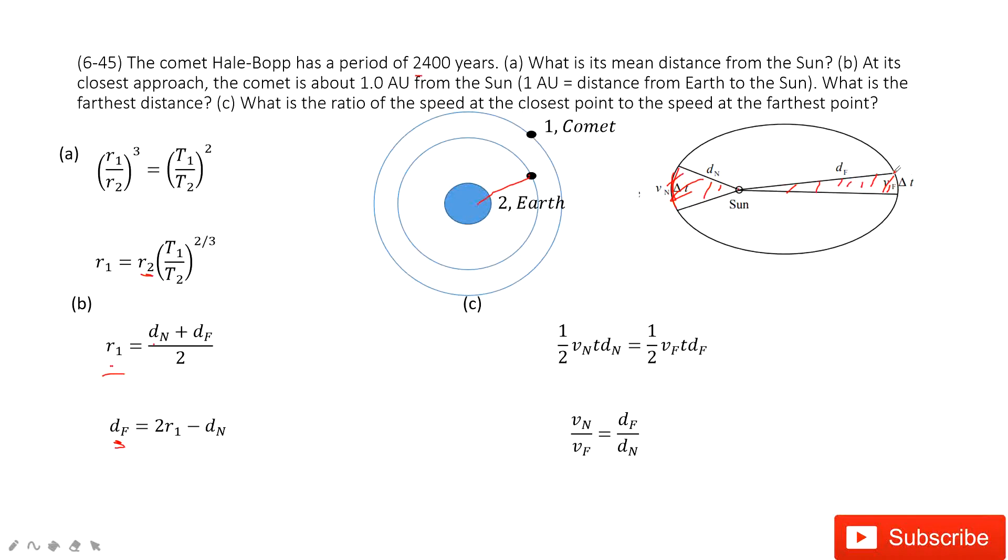And dn, still the area for this triangle. So one-half, this length vf times df. Then we can find the ratio for the speed at the nearest point to the farthest point. It is just the reverse of the ratio df to dn.